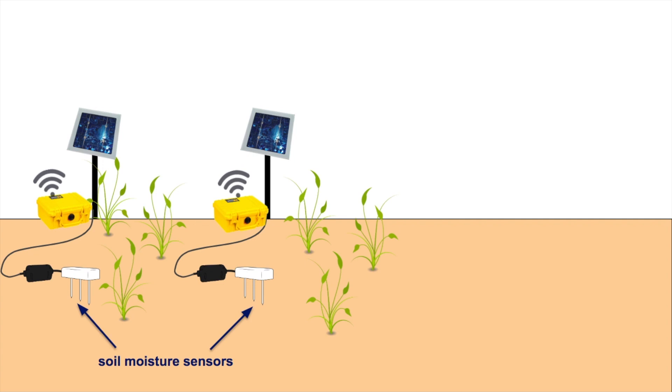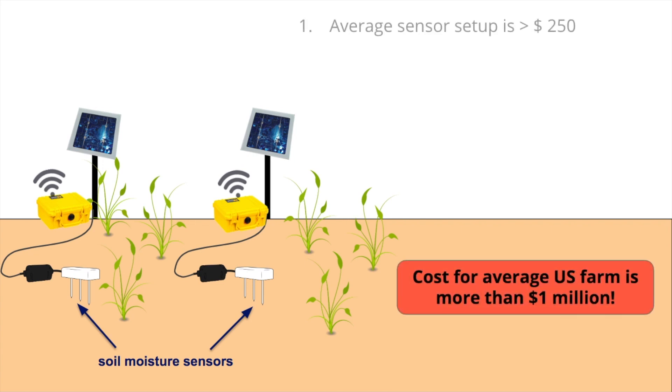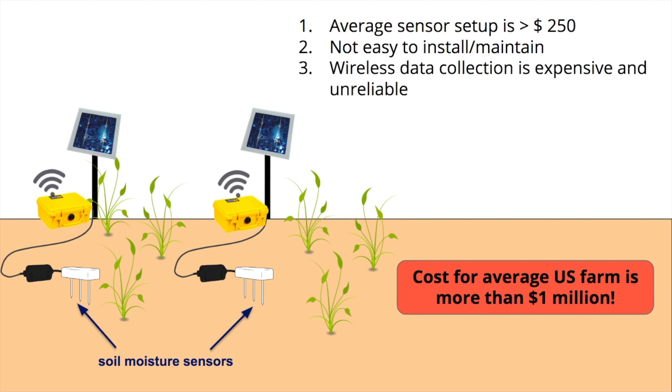Not very many farms use sensor networks. There are three primary reasons for this: high costs, the difficulty of deploying and maintaining the network, and unreliable or expensive data collection.